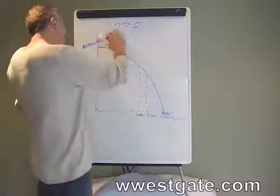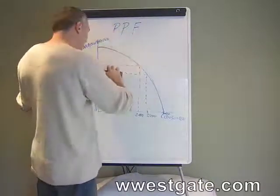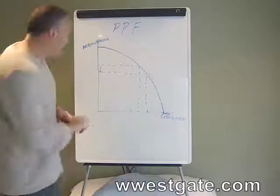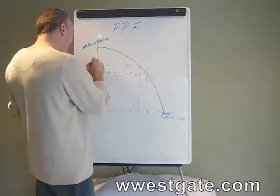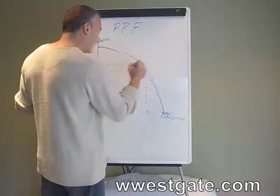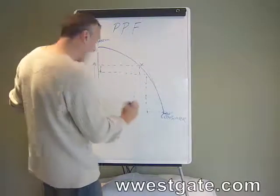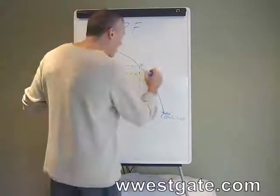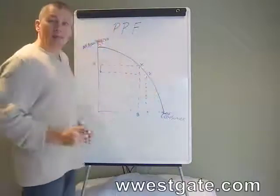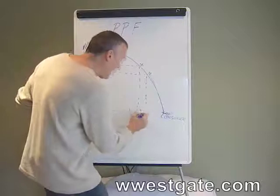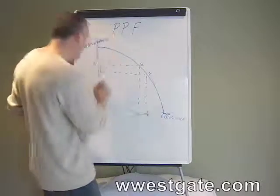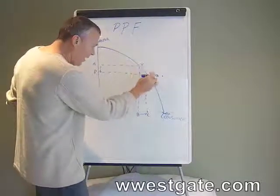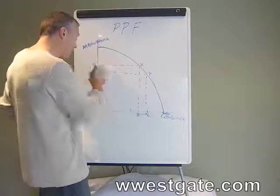The typical exam questions given will be something along the lines where a student is asked: the society is currently operating at point X, with an output of A amount of manufactured goods and B amount of consumer goods, and it now wants to move to point Y. What is the opportunity cost? The answer would be: in order to go from point B to C, you have to give up A to D. In order to move from X to Y, we do gain B to C, but we give up A to D.